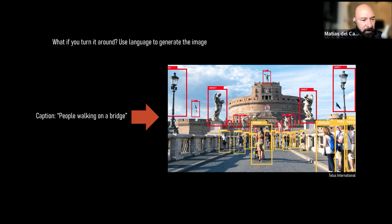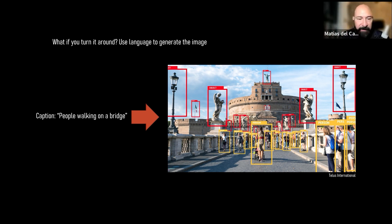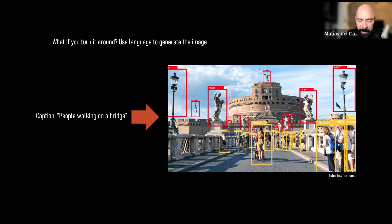What if we say 'people walking on a bridge' and then let the neural network generate the image? Just reversing the direction of information. This is an idea that has been repeatedly used — GANs operate like that, deep dreaming operates like that — so there's a variety of concepts that use that sort of reversal of information. It's a good trick.